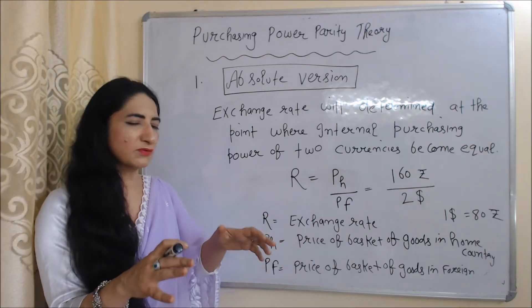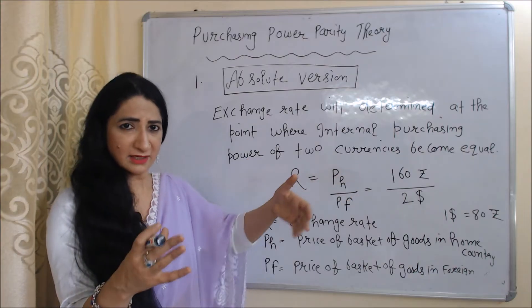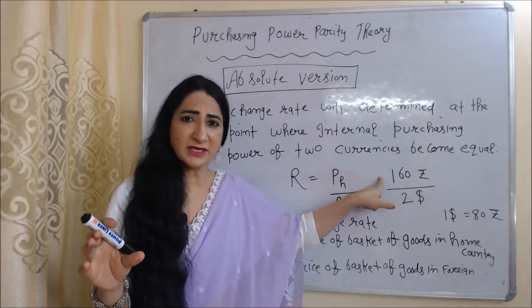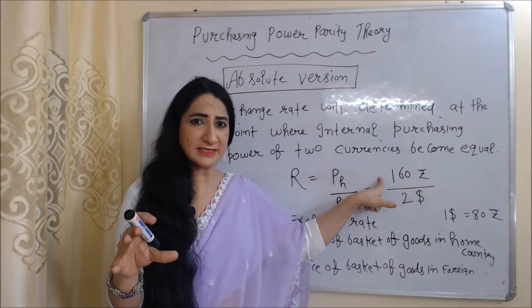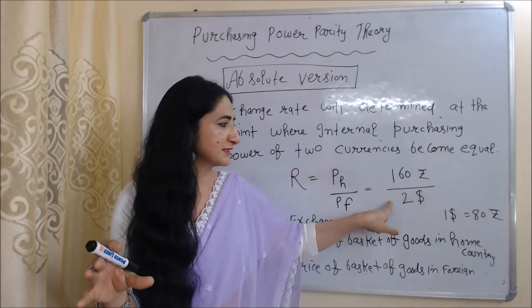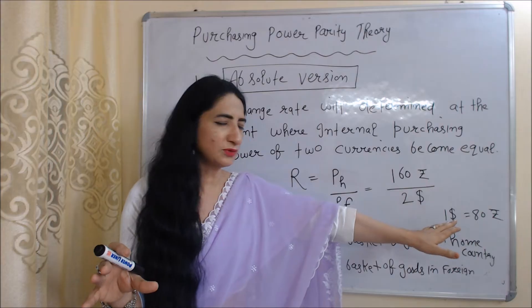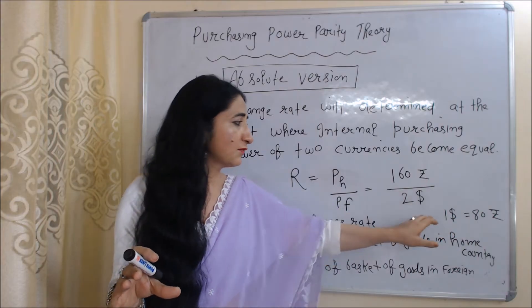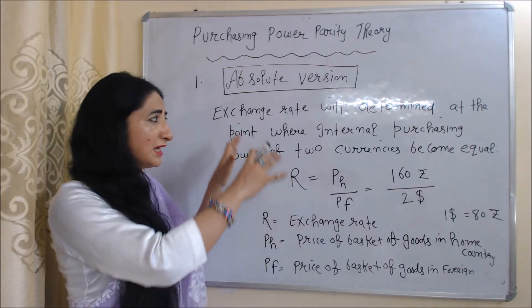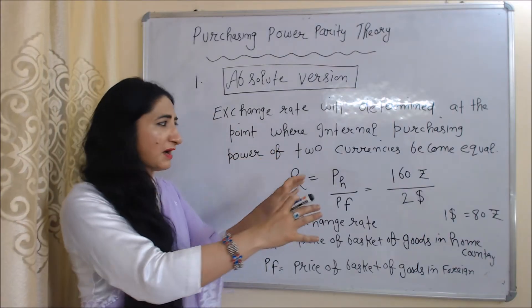Our home country is India and the foreign country is the US. The price of a basket of goods in India is 160 rupees and the same quality basket price in the US is 2 dollars. So 160 divided by 2 dollars equals 80, meaning 1 dollar is equal to 80 rupees. Here you can see we have determined the exchange rate at the point where the internal purchasing power of two currencies becomes equal.